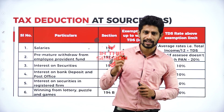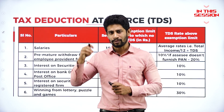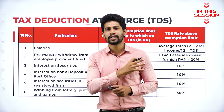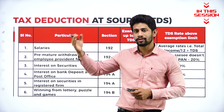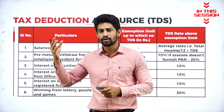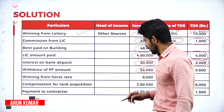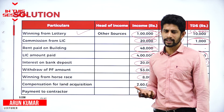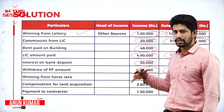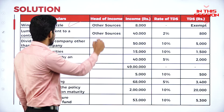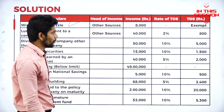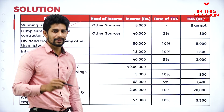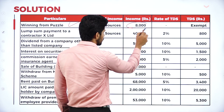TDS is nothing but tax deducted at source — from whichever source you earn income, the tax is deducted there itself and the remaining amount is credited to your account. For example, winning from a horse race of 8,000 rupees: up to 10,000 there is no need to deduct TDS, so here no TDS will be deducted.